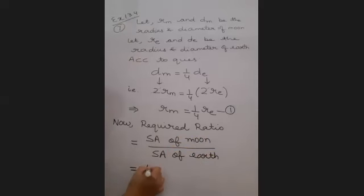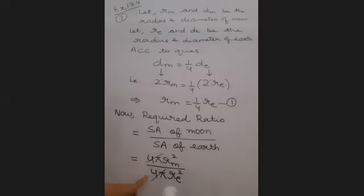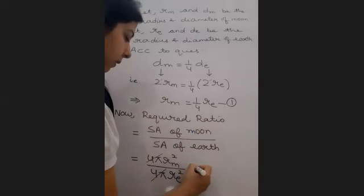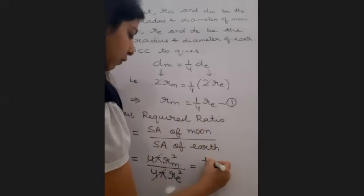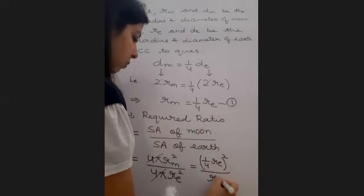So this will be 4 pi rm square divided by 4 pi re square. Now 4 pi and 4 pi will get cancel. In the place of rm, I will be writing 1 by 4 re square divided by re square.